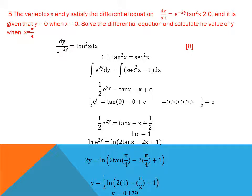Substituting C = 1/2: ½·e^(2y) = tan x − x + ½. Taking ln of both sides: 2y = ln(2·tan x − 2x + 1). Putting x = π/4: tan(π/4) = 1, so 2y = ln(2·1 − 2·π/4 + 1) = ln(2 − π/2 + 1). Calculating gives y = 0.179.